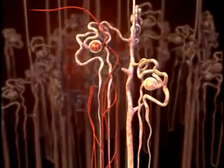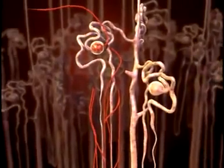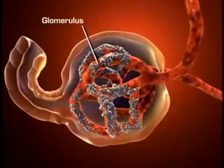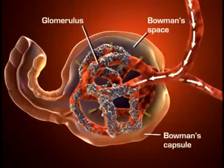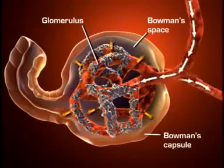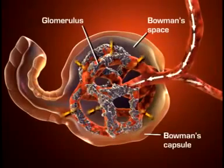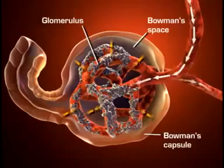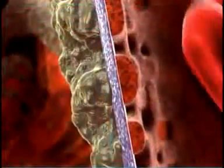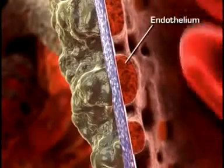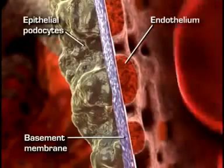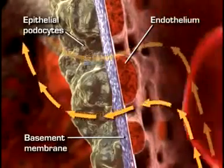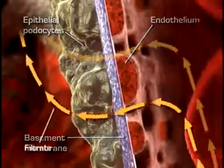Each nephron consists of a glomerulus and a system of tubules. The glomerulus is a unique high-pressure mass of capillaries that filters the blood. The glomerulus is encased in a thin, double-walled capsule called Bowman's capsule, and the space surrounding the glomerulus is called Bowman's space. Plasma-like fluid is filtered from the capillary blood into Bowman's space through the glomerular filtration membrane, which consists of three layers: the endothelium, the basement membrane, and the epithelium. This membrane allows some particles from the blood to pass through, but not all. The fluid filtered into Bowman's space is called filtrate and forms the primary urine.